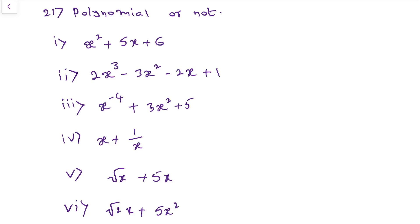The question is: check whether the given expressions are polynomial or not. When we confirm a given expression as a polynomial, if the power of a variable is a whole number, then we consider that expression as a polynomial. Let us check the powers of every variable in the given question.